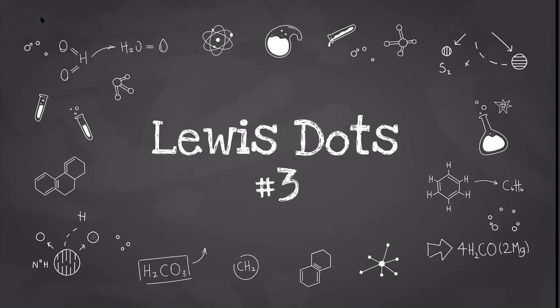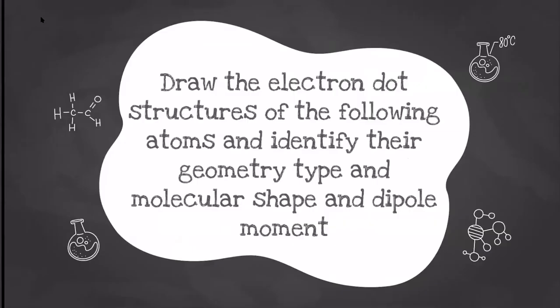Hello everybody, this is Mr. Navarrete and today we'll be going over Lewis Dot Structures number three. For all these questions it says draw the electron dot structures of the following atoms, identify their geometric shape, their molecular shape, and now we have to identify their dipole moment. So let's get started.